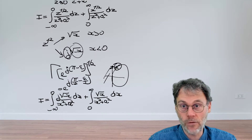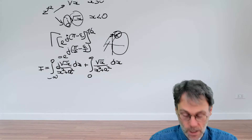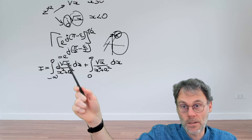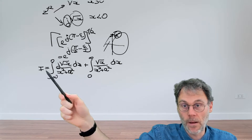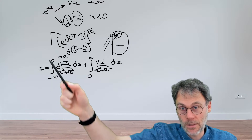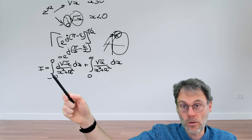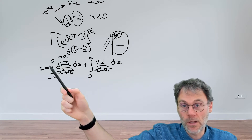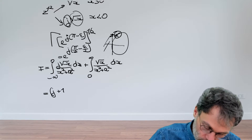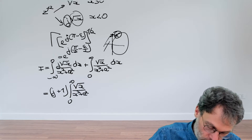To relate the first integral to the second, we substitute x → -x in the first integral. Since x² is even, the denominator is unchanged; the limits flip but the minus sign from dx flips them back to 0→∞. The only difference that remains is the factor of j in front. So the total is (1+j) times the integral from 0 to ∞ of sqrt(x)/(x²+a²) dx.